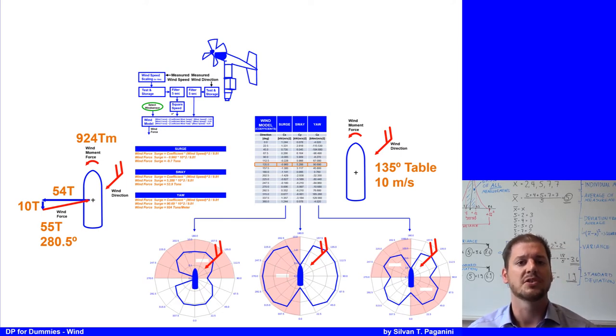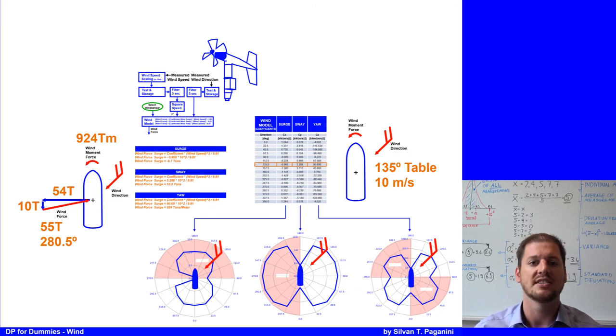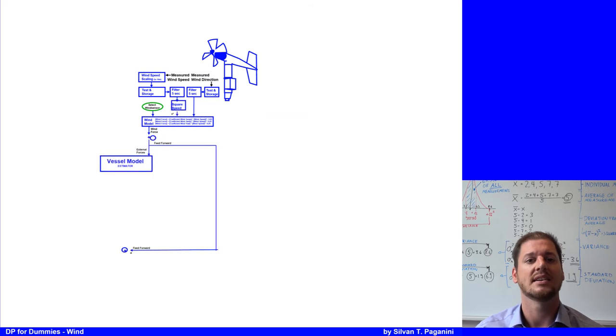So the combined force for position keeping would be 55 tons. In order to counteract changes in the external force as soon as they are detected, rather than first allowing the vessel to drift away from the required position, the calculated wind forces are straight feed forward as an additional force demand. Also, the wind force is assigned to the vessel model.